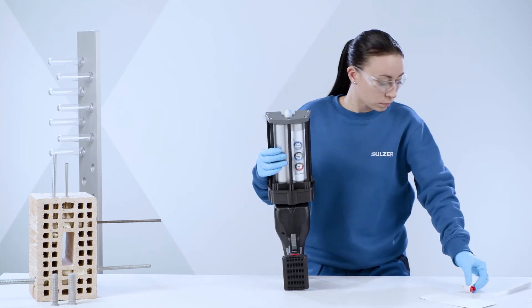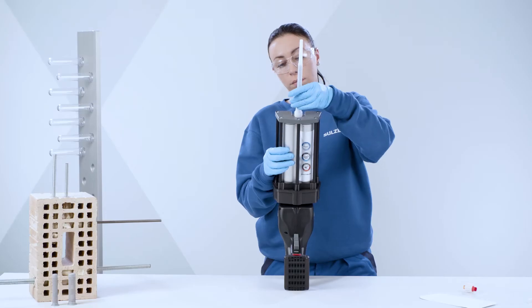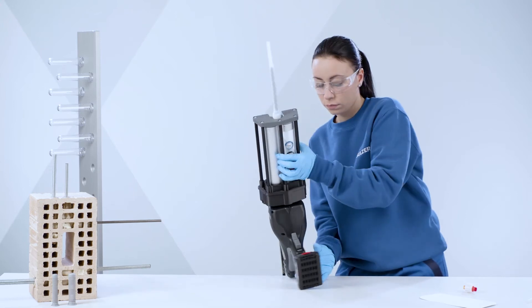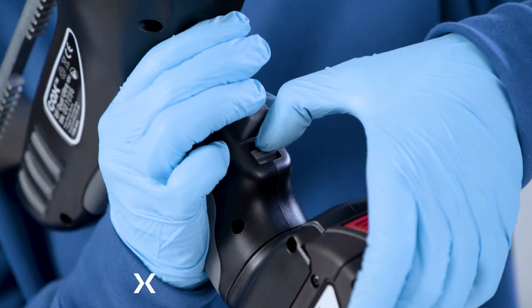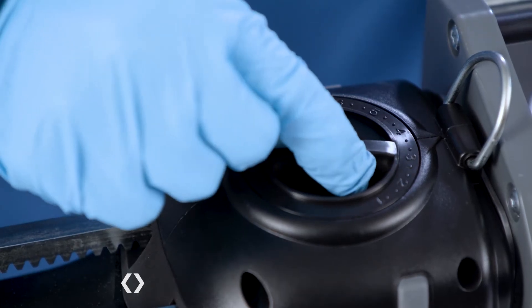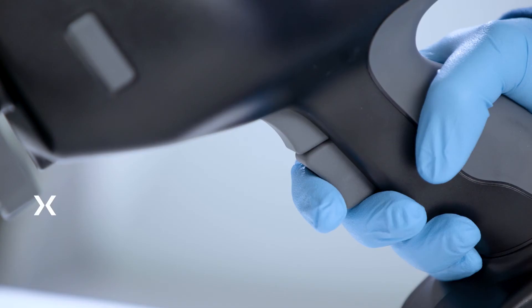Remove the closure and attach a static mixer nozzle. Disengage the trigger lock and set your speed dial to low output rate. Engage the plungers by pressing the upper trigger and then the lower trigger to dispense material.